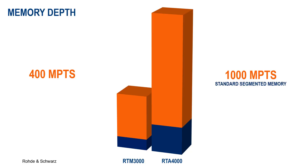History and segmented memory mode options also come standard on the RTA4000. This level of memory depth is typically only found in higher-end oscilloscopes, and even then is usually only available as an upgrade.